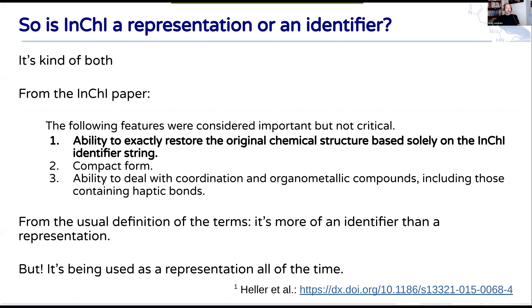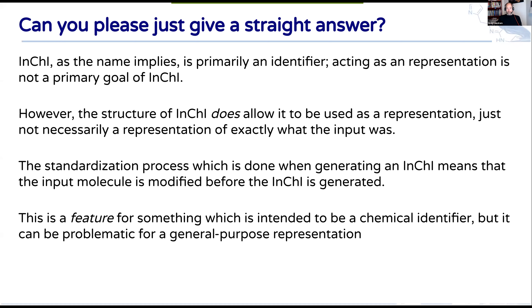My take: InChI is kind of both. From the InChI paper, the team noted that the ability to exactly restore the original chemical structure from the InChI alone was considered important but not critical — that's actually a characteristic of a representation. So from the usual definition of terms, InChI is primarily an identifier, because acting as a representation was specifically not a primary goal. However, it is used as a representation all over the place, and it's a nice thing to have that the identifier also encodes some form of structure.